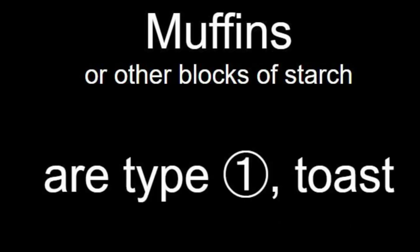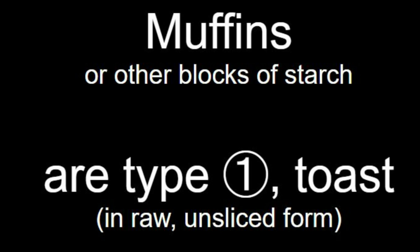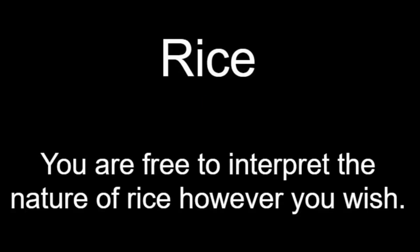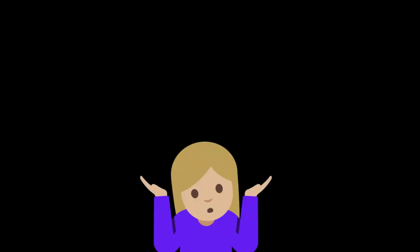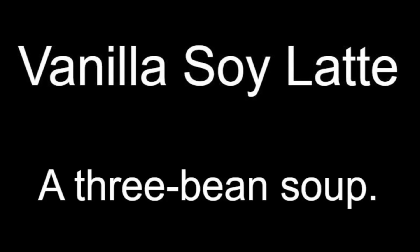Muffins or other blocks of starch are type 1 toast in raw, unsliced form. Muffins are toast? Rice — you are free to interpret the nature of rice however you wish. I don't think rice is anywhere on the sandwich spectrum, so I don't know why you'd bring it up. And a vanilla soy latte is a three-bean soup. Now what does soup have to do with sandwiches?